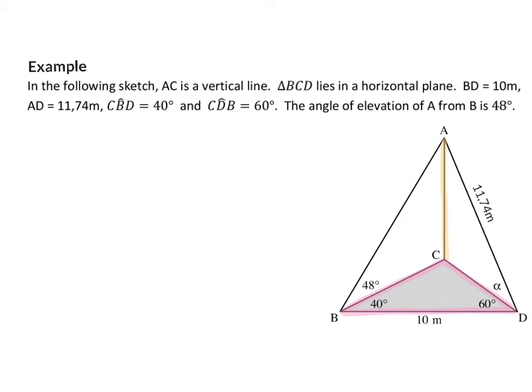The angle of elevation of A from B is 48 degrees, so if we look from B up to A, that angle is 48 degrees.